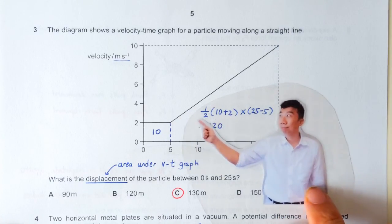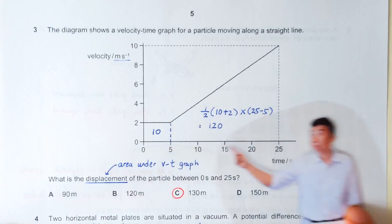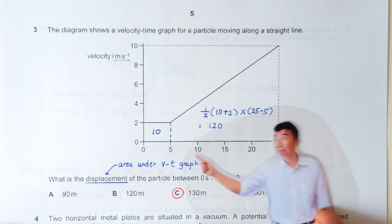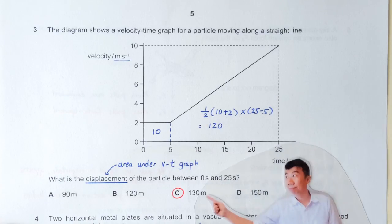So average of 10 plus 2, that's the 10, that's the 2, times the so-called height, heights of the trapezium. So the height is 25 minus 5. So you get the number there, just add them up, you get the 130.